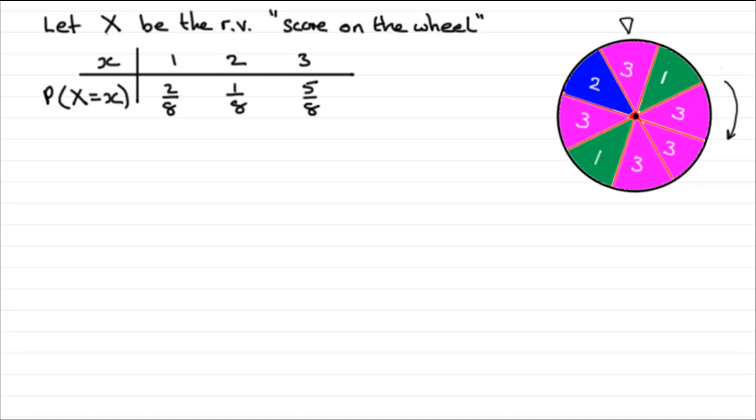I showed you how to draw up a probability distribution table for the score, and it was something like this. We had let X be the random variable, the score on the wheel, and you could get those observed values of 1, 2, or 3.